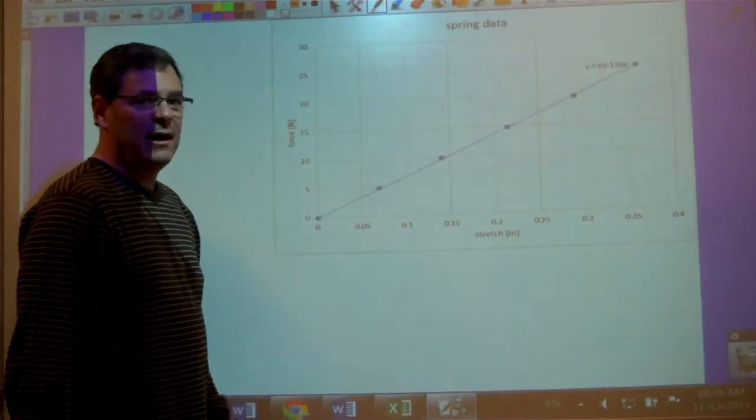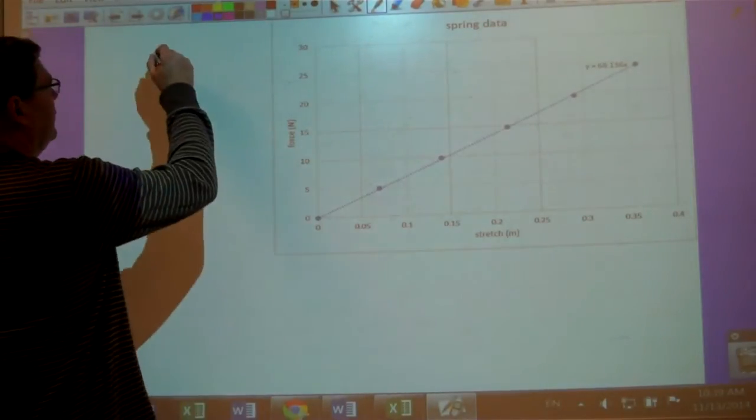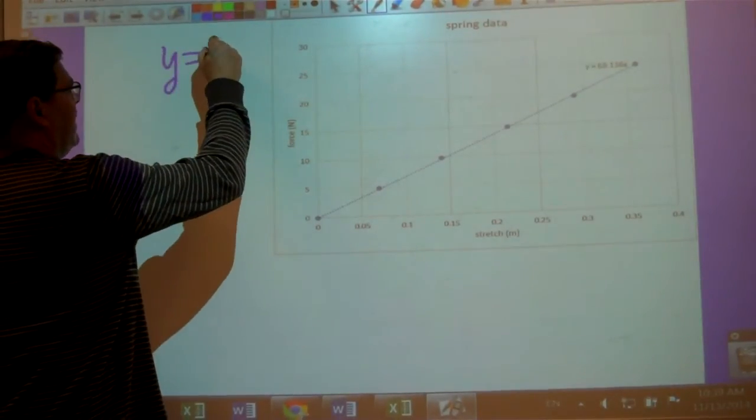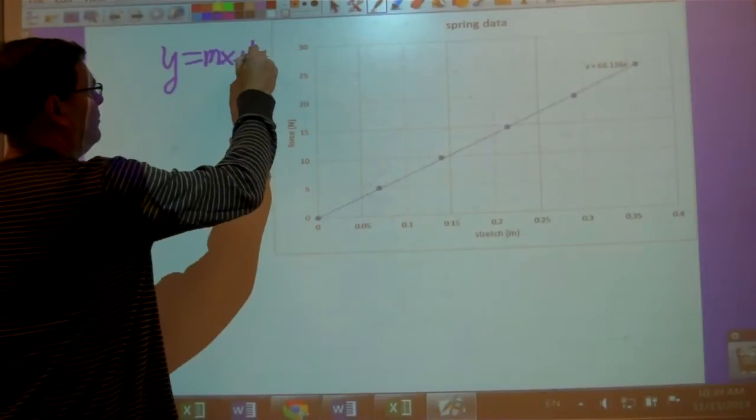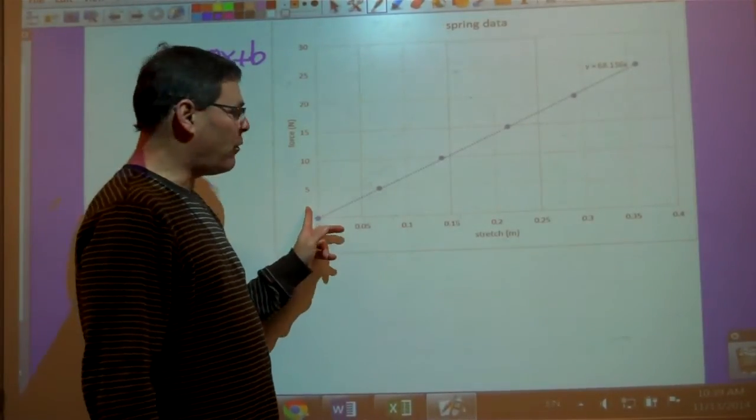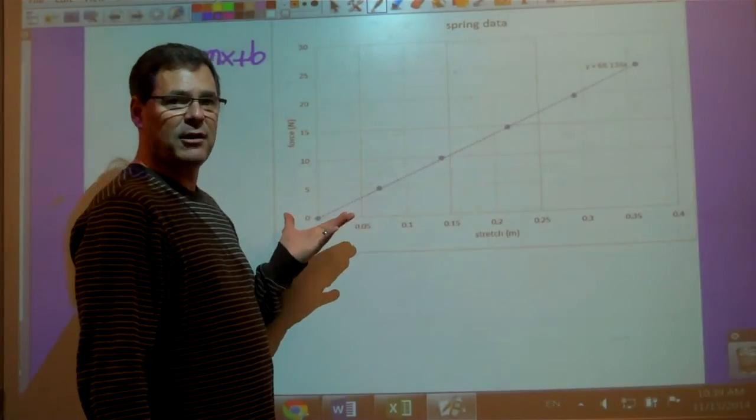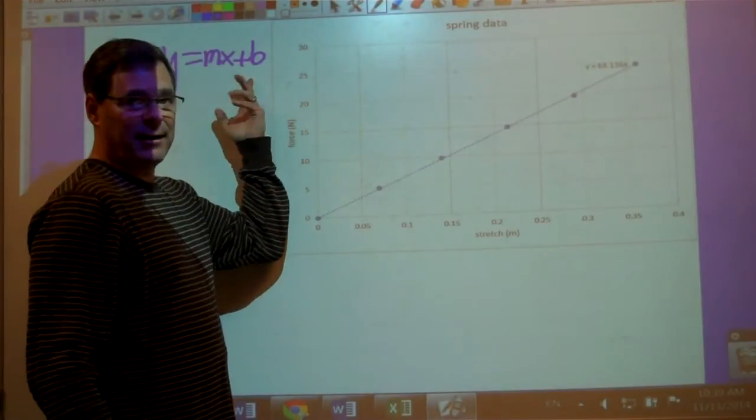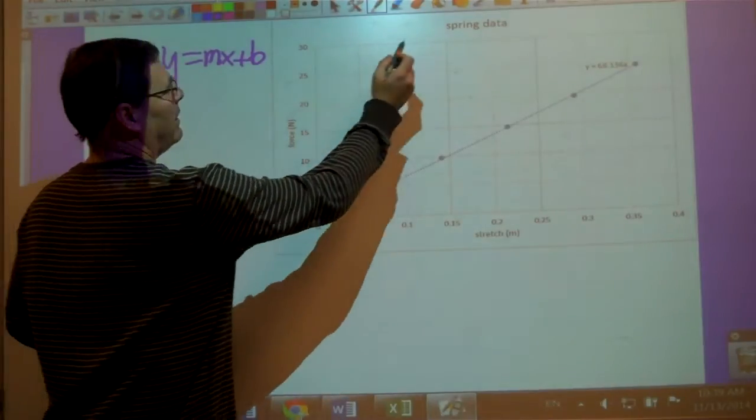So if I use my equation for a straight line, y equals mx plus b, of course if I have no force pulling on the spring, the stretch of the spring is 0. So that means the y-intercept is 0.